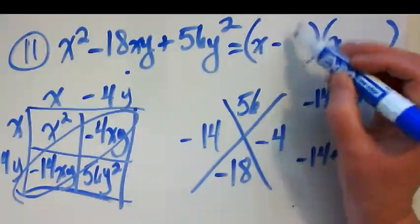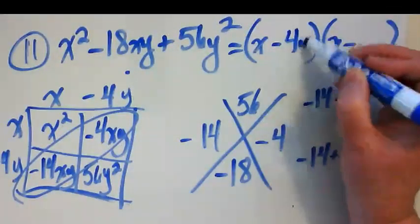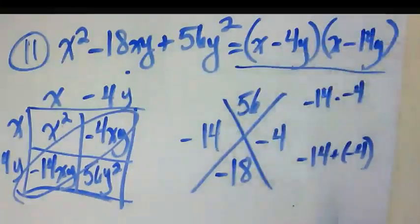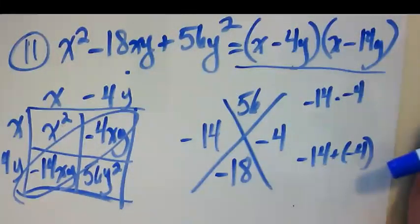So that means that I have a negative 4y and a negative 14y. And that is our solution when I factor this quadratic.